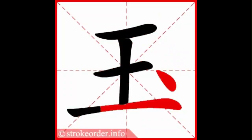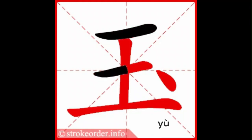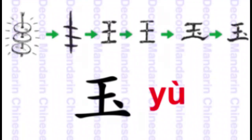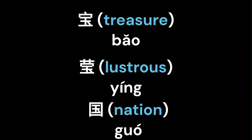In today's video, we'll teach you the Chinese character for jade, pronunciation 玉 (yù). This is a fun character in the Chinese language because the character 玉 was originally a necklace adorned with three pieces of jade that gradually morphed into its modern form. This makes it easy to learn. In radical form, 玉 is found in words such as treasure (宝 bǎo), lustrous (莹 yíng), and nation (国 guó).